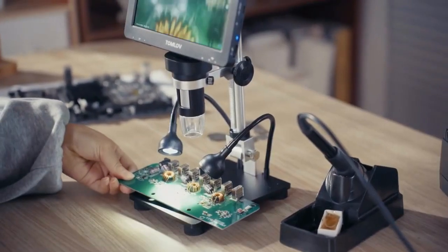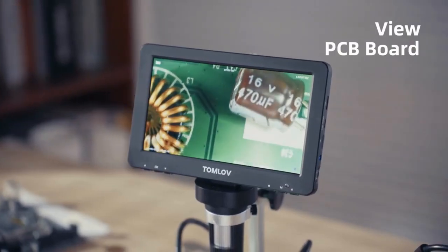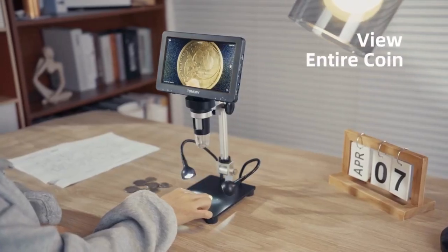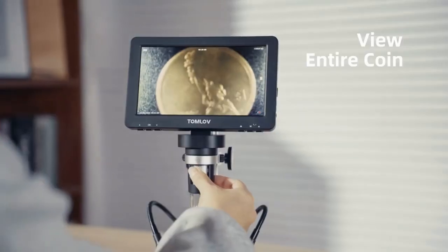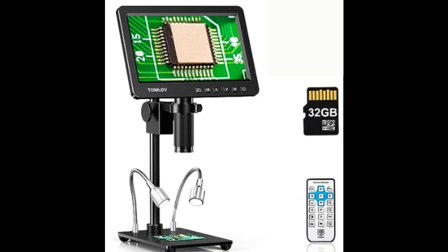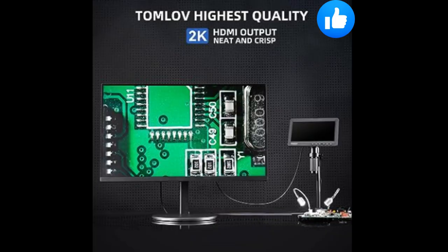So there you have it, the Tomlov DM209 2K HDMI digital microscope, a game changer in the world of microscopy. From its remarkable image quality powered by the Sony CMOS IMX sensor to its versatile connectivity options and user-friendly features, this microscope truly takes your exploration to the next level. If you're ready to unveil the hidden world in stunning detail, the DM209 might just be your perfect companion.